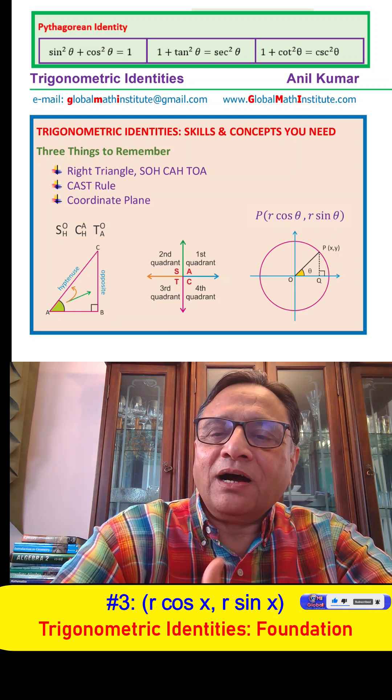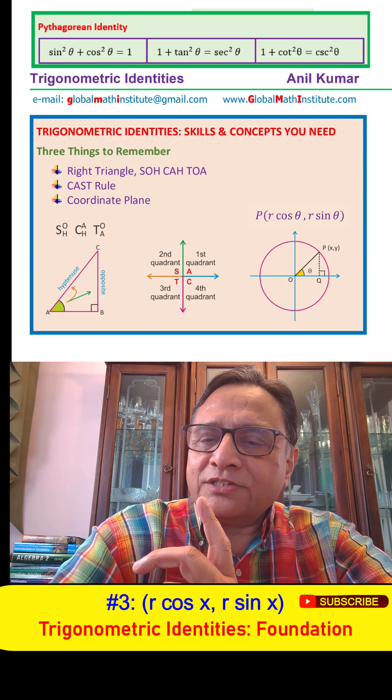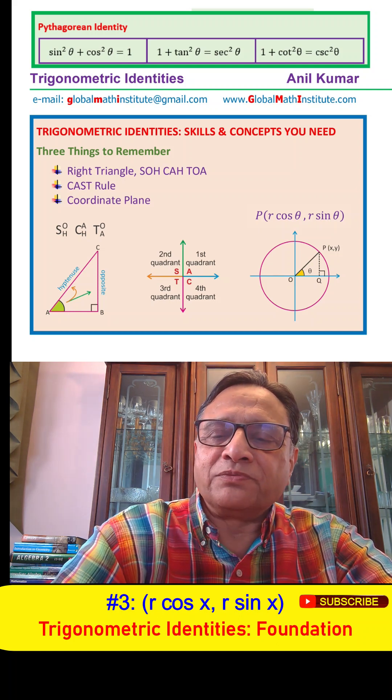X being r times cos θ, y being r times sin θ, where r is the distance of the point from the origin, which is equal to square root of x squared plus y squared.